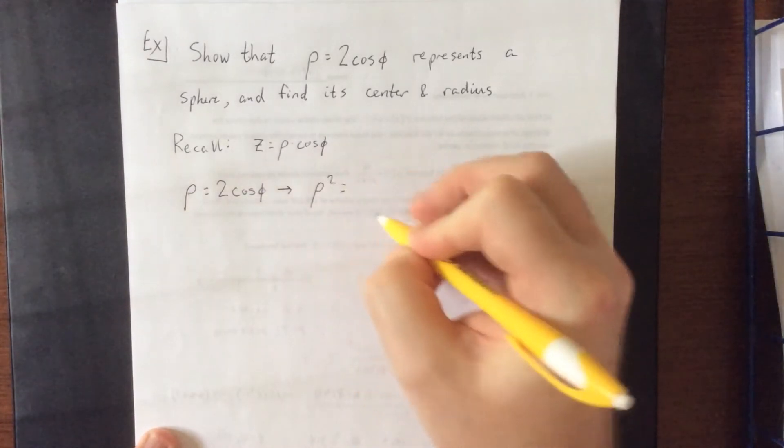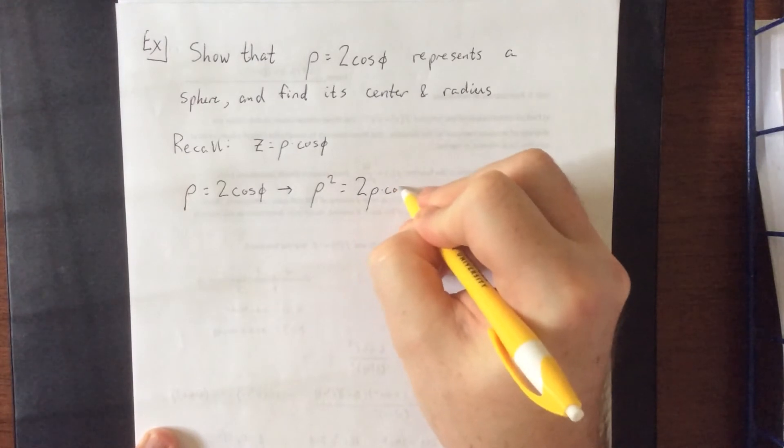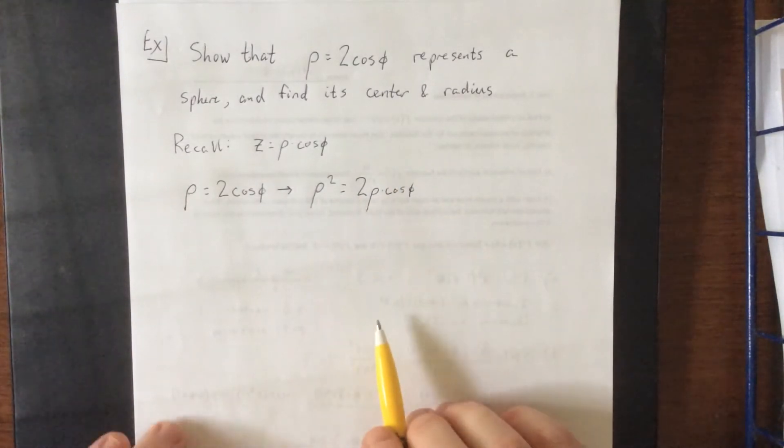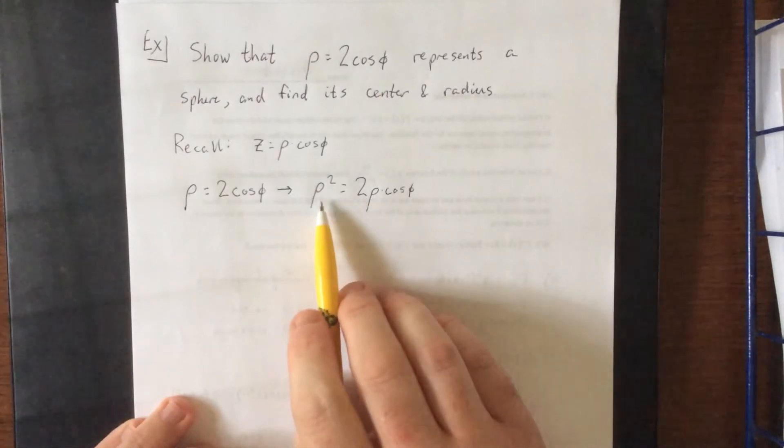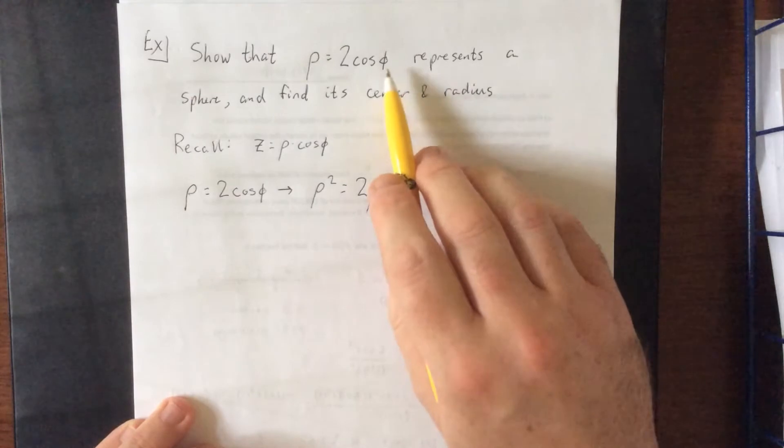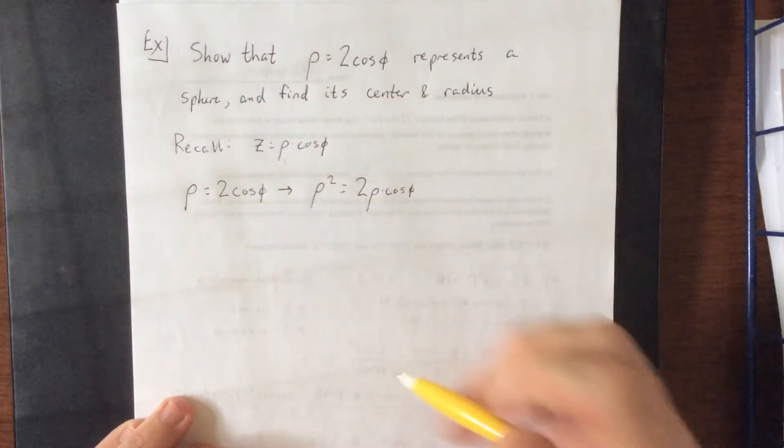On the left-hand side, rho times rho will be rho squared, and writing this into the appropriate order, this would be 2 rho cosine phi. Rho squared can be converted back into Cartesian coordinates, and rho cosine phi can be converted as well because of this conversion right here.